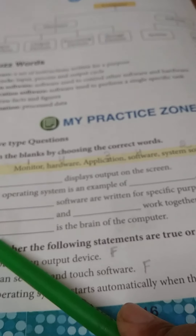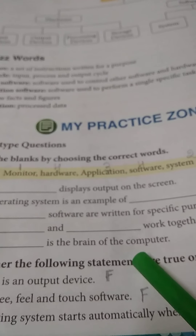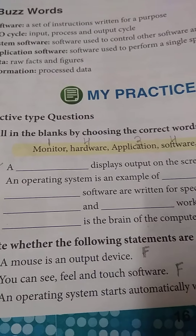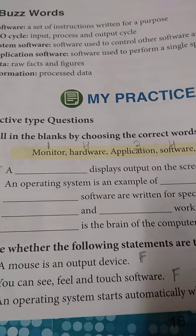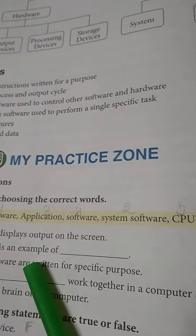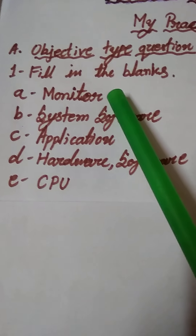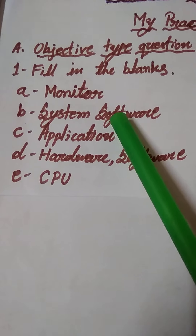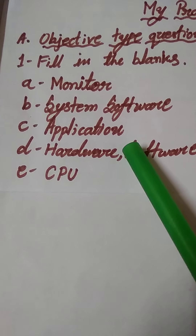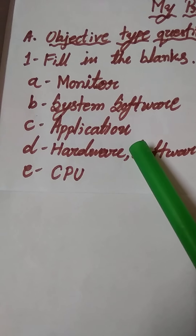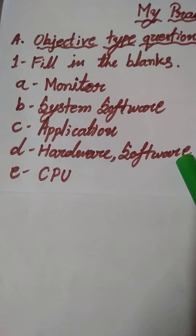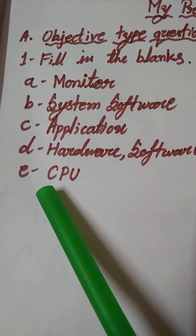E: Blank is the brain of the computer. The answer is CPU. Write the answers students. To repeat: in A write monitor, in B write system software, in C write application, in D write hardware and software, and in E write CPU.